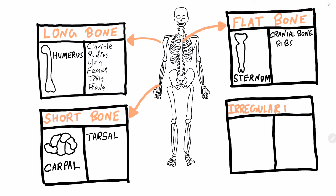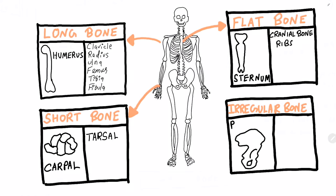Let us take a look at irregular bones. An irregular bone is one that does not have any easily characterized shape and therefore does not fit in any other classification. These bones have a more complex shape, like the vertebrae that supports the spinal cord and protects it from compressive forces. Some other examples of irregular bones are the ethmoid bone and the sphenoid bones that protect and provide structural stability to the skull.